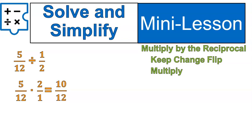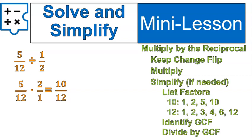5 times 2 is 10. 12 times 1 is 12. That should be your fraction. Then we're going to simplify if needed. I'll list all the steps over here. If you need more practice with simplifying, go back to the previous lesson. But those are the steps.